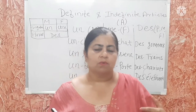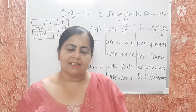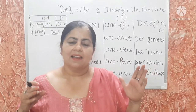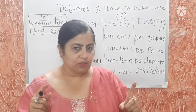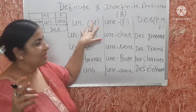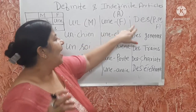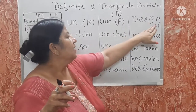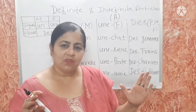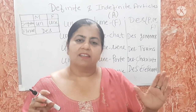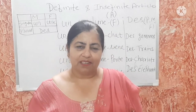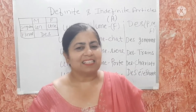These are the examples and identifications of how to write definite and indefinite articles in French. In definite articles: le, la, les, and l'apostrophe. In indefinite articles: un with masculine, une with feminine, and des with plurals for both masculine and feminine. If you have any doubt or query, comment in the comment box or mail me. Till then, goodbye — please like, share, and subscribe to my channel.